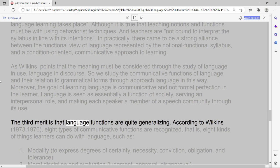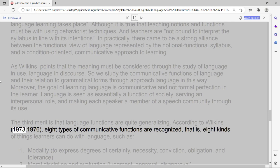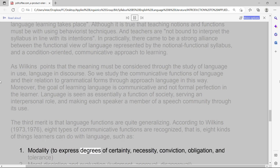The third merit is that language functions are quite generalizing. According to Wilkins, 1973-1976, eight types of communicative functions are recognized, that is, eight kinds of things learners can do with language, such as: 1. Modality, to express degrees of certainty, necessity, conviction, obligation, and tolerance.